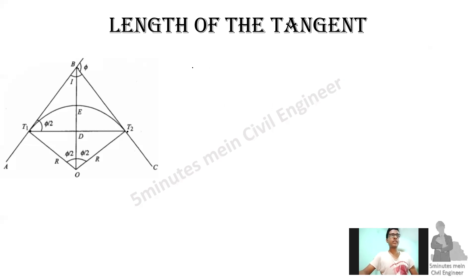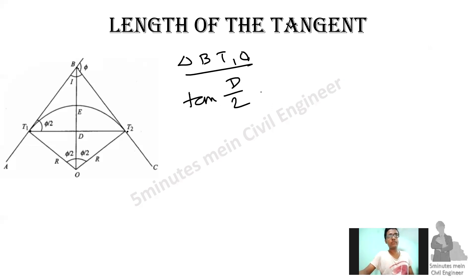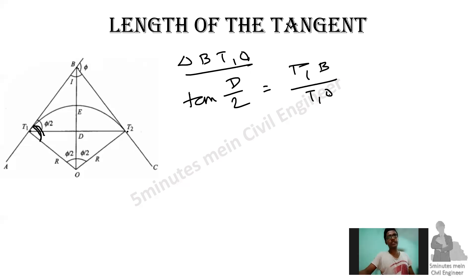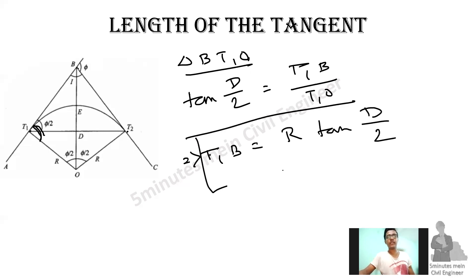The length of the tangent — we have to talk about triangle BT1O. We calculate using tan(D/2). The angle at T1 is 90 degrees. So the tangent length formula involves tan(D/2), and the value of the tangent length is R times tan(D/2). This formula of the tangent is very important.